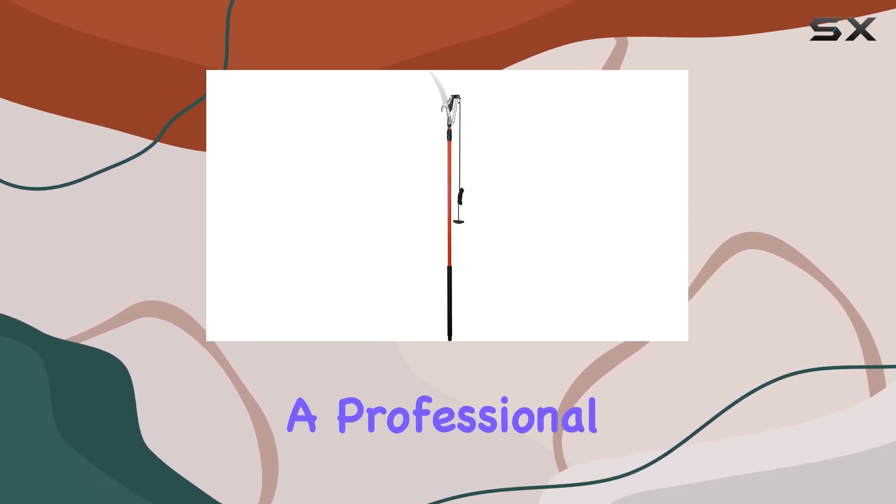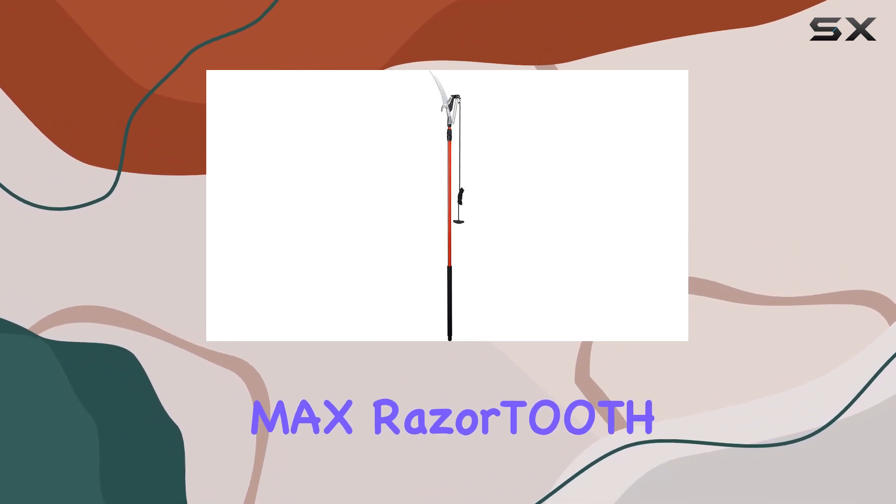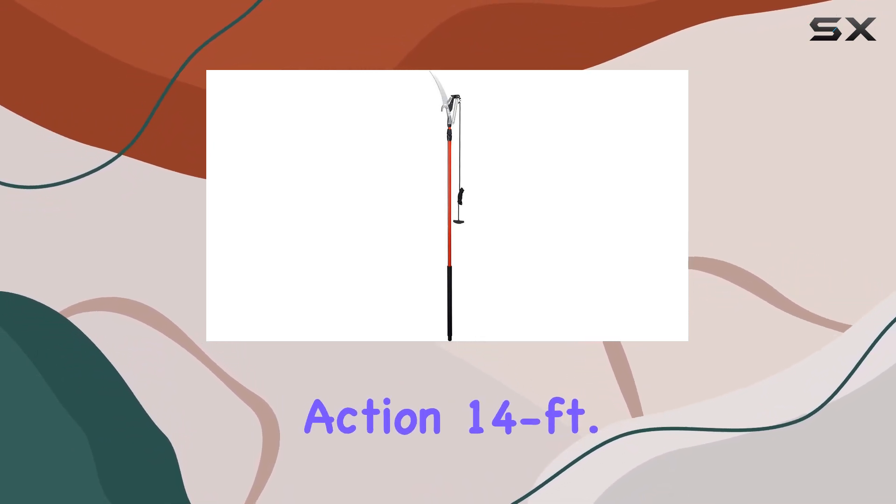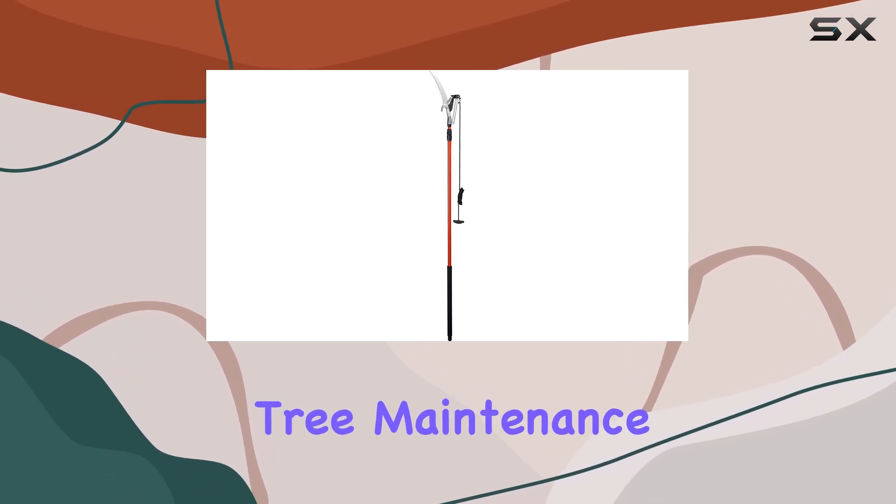Whether you're a professional arborist or a dedicated gardener, the Corona TP-6870 Max Razor Tooth Dual Compound Action 14-feet Tree Pruner is a top choice for effective and efficient tree maintenance.